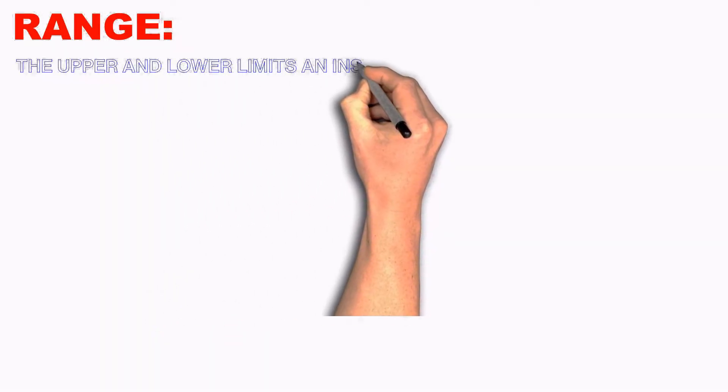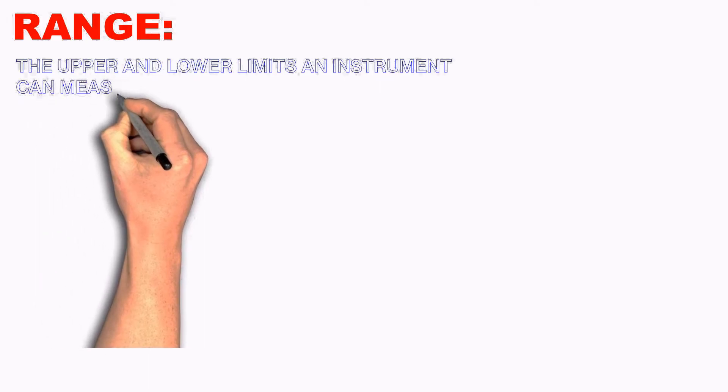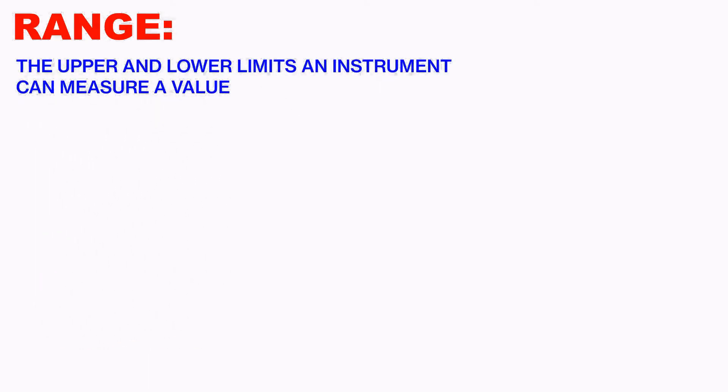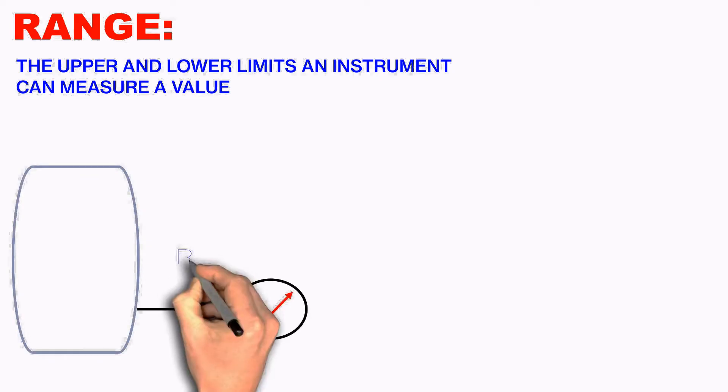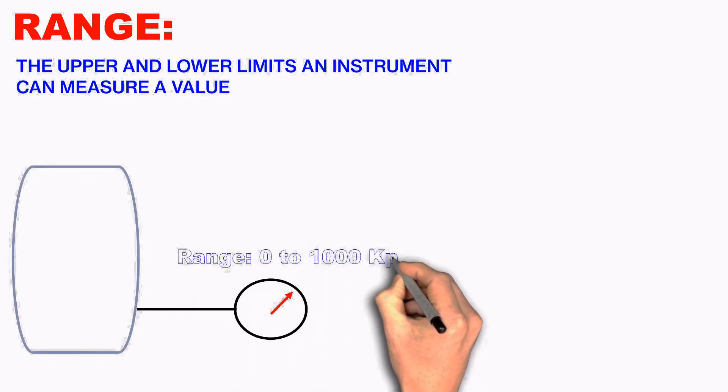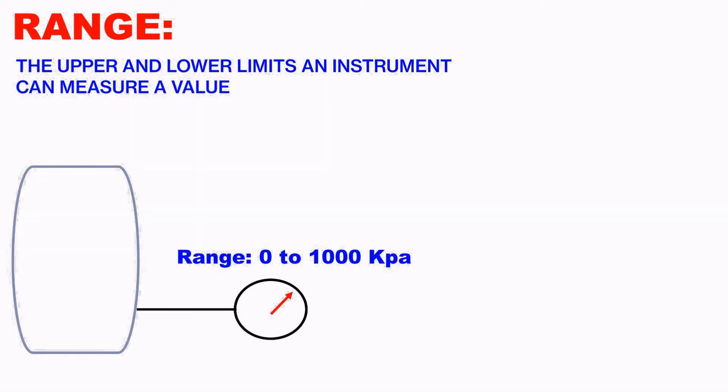And next is the range. Range, everyone knows it's the upper and lower limit an instrument can measure a value. For example, the same vessel, we have a pressure gauge and the range of this pressure gauge is 0 to 1000 kPa. So this is the range, and finally we are seeing the precision.